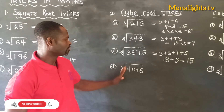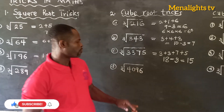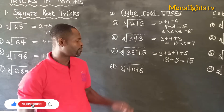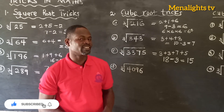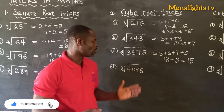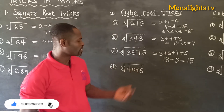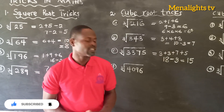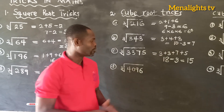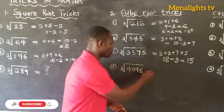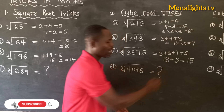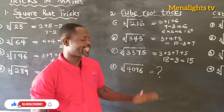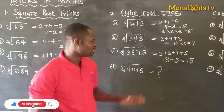Now for the fourth one: find the cube root of 4,096. You are going to solve it and give me the answer in the comment section.